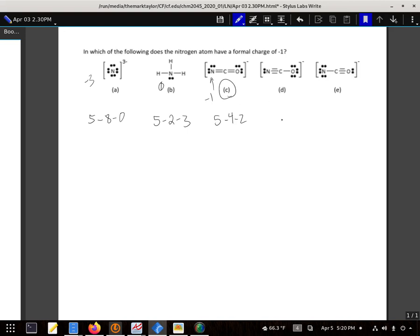But just to make sure we got it, our next one, this nitrogen: five minus two electrons and three bonds, or zero. And this one: five minus six and one, so that would be negative two.